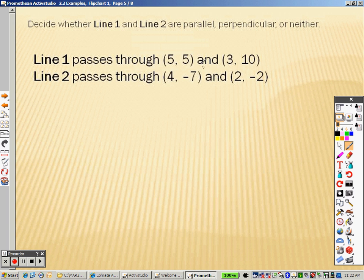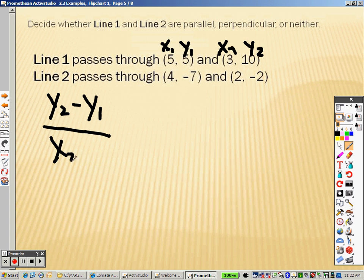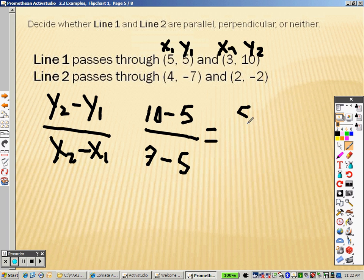Same idea, same things to remember. We have x1, y1, x2, and y2. So, according to the formula here, I'll write the formula down again. This is the slope formula. So you've got to remember that. y2 is 10, minus y1, which is 5, over 3, which is x2, minus x1, which is 5. 10 minus 5 is 5. 3 minus 5 is negative 2. So, the slope for the first one is negative 5 halves.